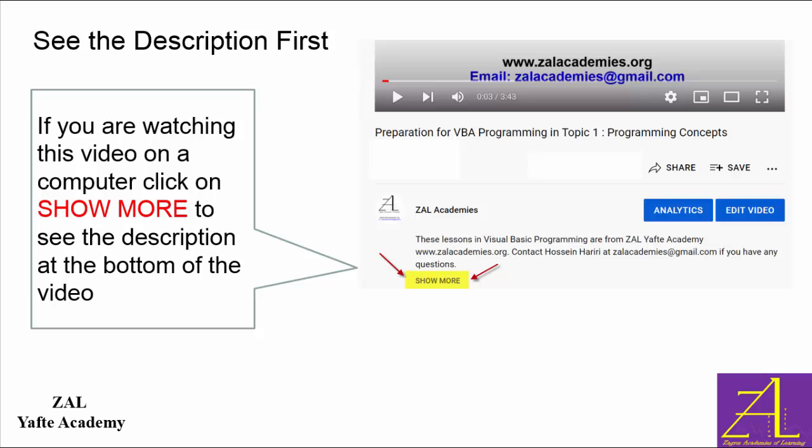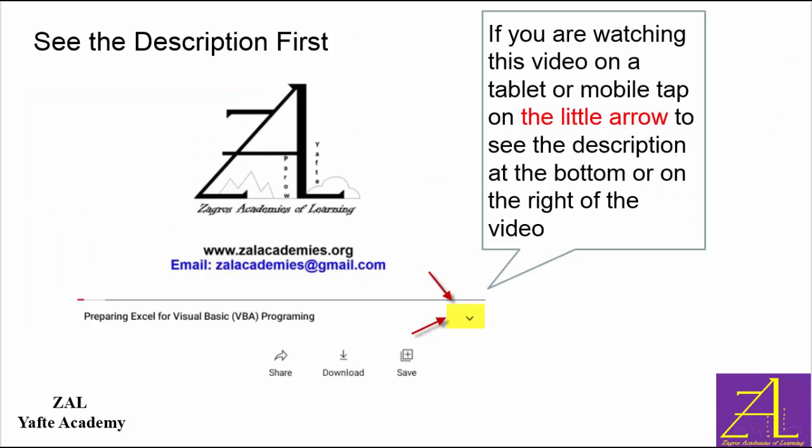Check the description of this video before starting to watch it. If you are using a computer, the description is at the bottom. Click show more to see more of the description. If you are using a tablet or a mobile, click on the little arrow at the bottom right to view the description at the bottom or on the right of the video.